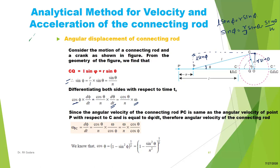The angular velocity of connecting rod PC is the same as the angular velocity of point P with respect to C, which equals dφ/dt. Therefore, the angular velocity of the connecting rod is ω_PC = dφ/dt = (cos(θ)/N)·ω / cos(φ), which simplifies to (ω/N)·cos(θ)/cos(φ). We know that cos(φ) = √(1 − sin²(φ)), and since sin(φ) = sin(θ)/N, we substitute to get cos(φ) = √(1 − sin²(θ)/N²).